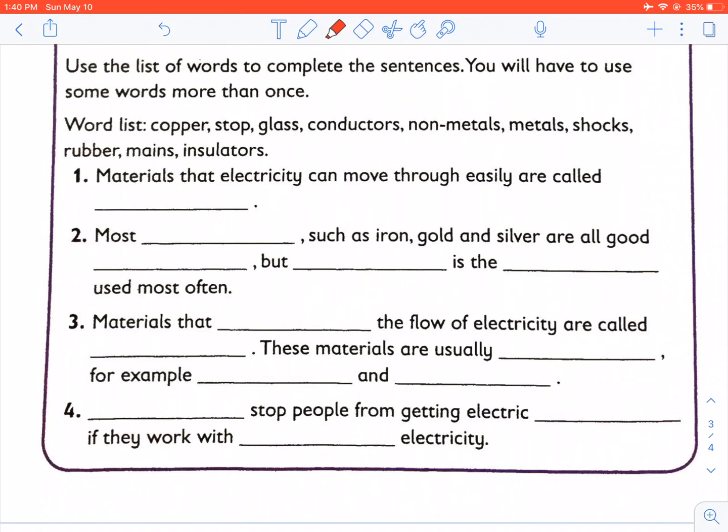Materials that electricity can move through easily are called conductors. Most metals such as iron, gold and silver are all good conductors, but copper is the metal used most often.